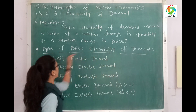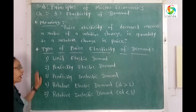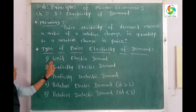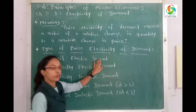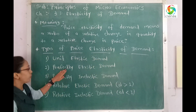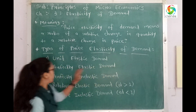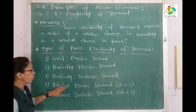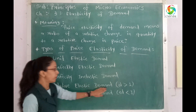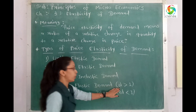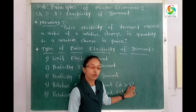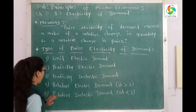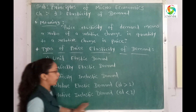In this concept there are five types of price elasticity of demand. First, unit elasticity of demand. Second, perfectly elastic demand. Third, perfectly inelastic demand. Fourth, relative elasticity of demand — that means elasticity greater than one. And fifth, relative inelastic demand — elasticity less than one.